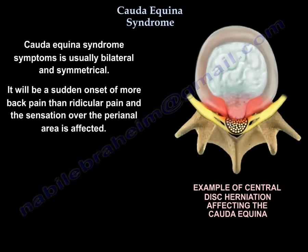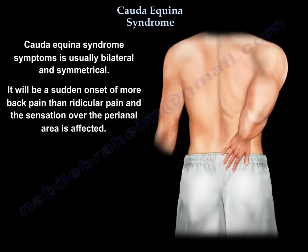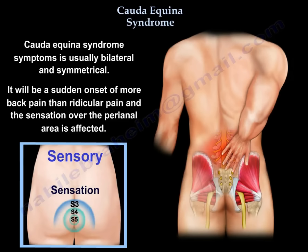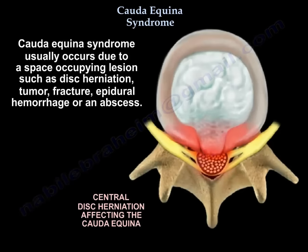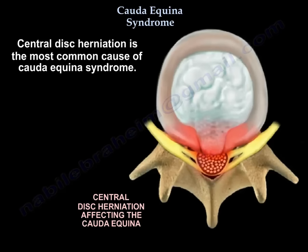Cauda Equina Syndrome symptoms are usually bilateral and symmetrical. There will be a sudden onset of more back pain than radicular pain, and sensation over the peri-anal area is affected. Cauda Equina Syndrome usually occurs due to space-occupying lesions such as disc herniation, tumor, fracture, epidural hemorrhage, or an abscess. Central disc herniation is the most common cause of Cauda Equina Syndrome.